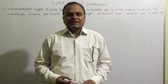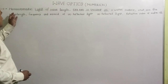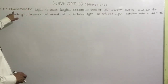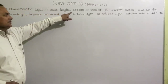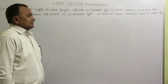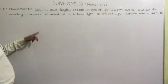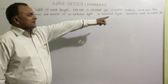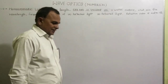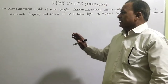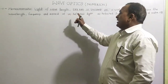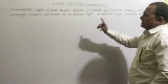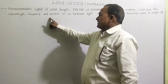In wave optics, we will solve a numerical related to wavelengths. The question is: a monochromatic light of wavelength 589 nanometer is incident on a water surface. What are the wavelength, frequency, and speed of the reflected light and refracted light? The refractive index is given as 1.33.